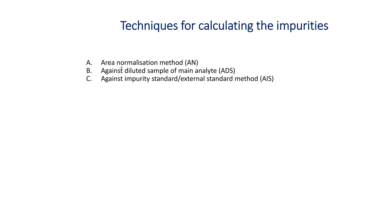The following techniques are available for calculating impurity. First, the area normalization method (AN), also called the area percent method. Second, against diluted sample of main analyte (ADS). Third, against impurity standard (AIS), also called the external standard method.